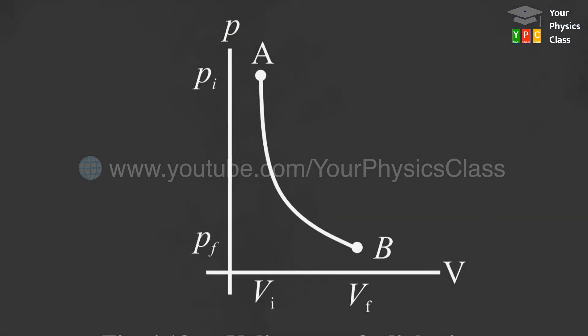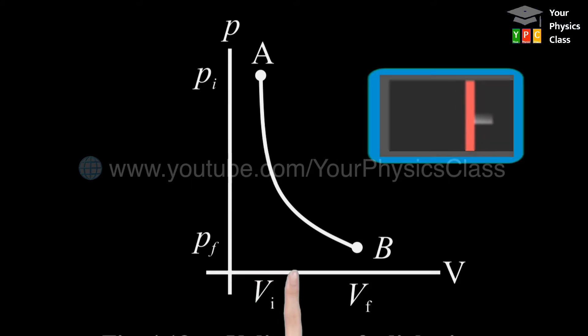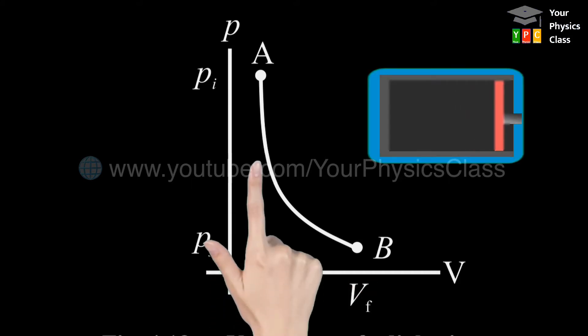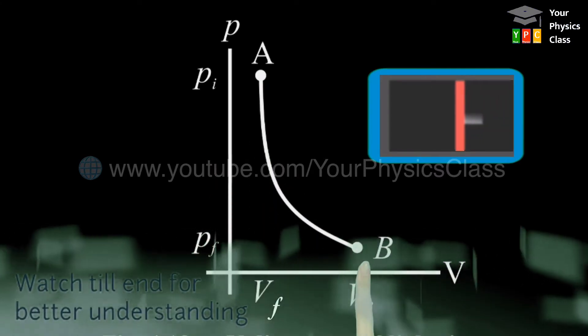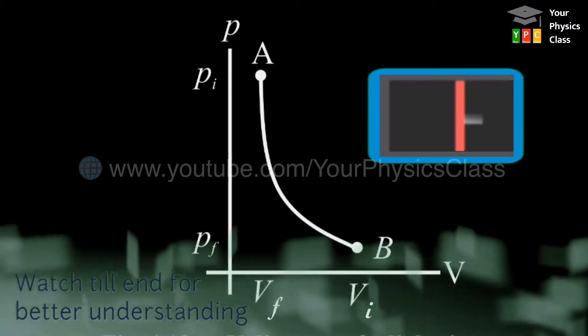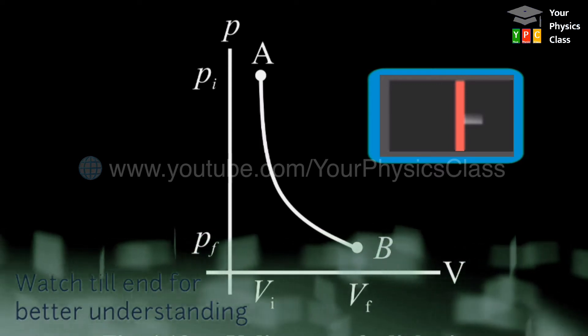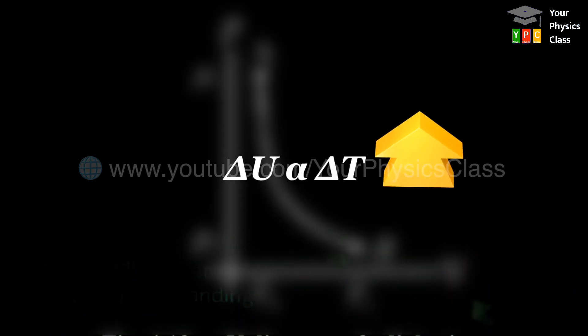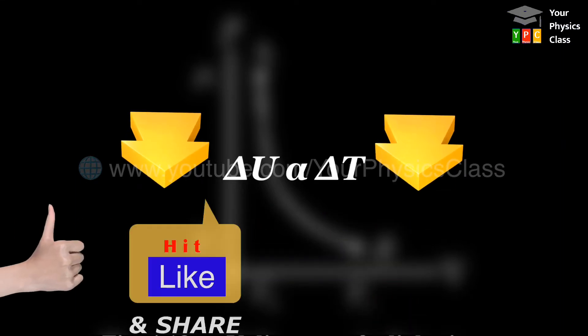The PV diagram for the adiabatic change is shown on your screen. When the system expands adiabatically, the area under the curve is positive, showing that positive work is done. When the system is compressed adiabatically, then area below the curve would be negative, therefore work done would be negative. The internal energy of the system increases in an adiabatic compression. It is observed that for many systems, temperature increases when internal energy increases and decreases when internal energy decreases.